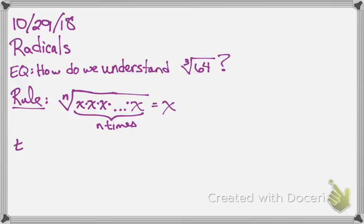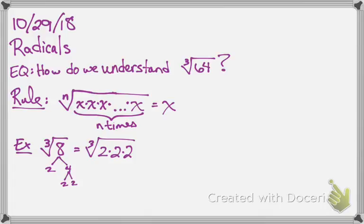For example, if I look at the cube root of 8, let's do a little factor tree: 2 and 4, 2 and 2. So cube root of 8 is the same as cube root of 2 times 2 times 2. Notice 2 is being multiplied by itself three times, so the cube root of 8 is just 2.